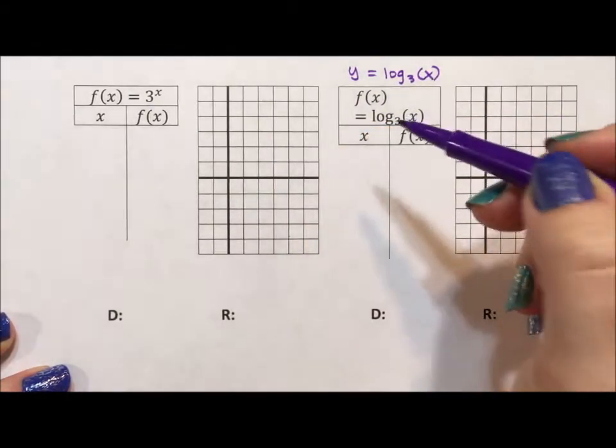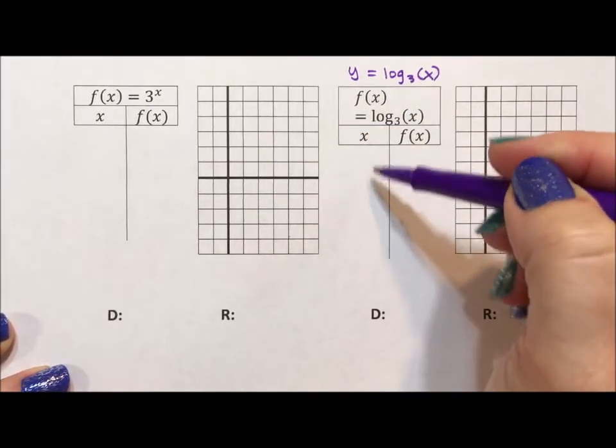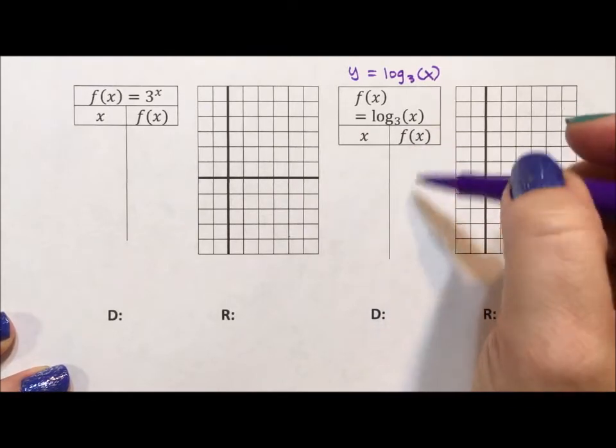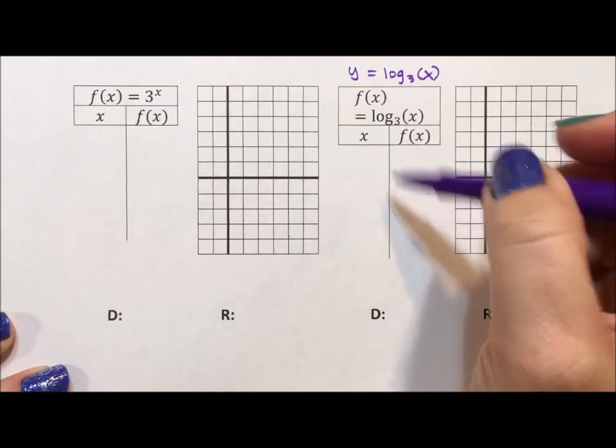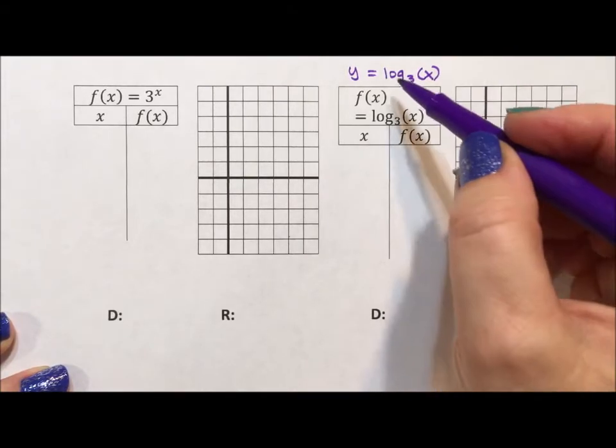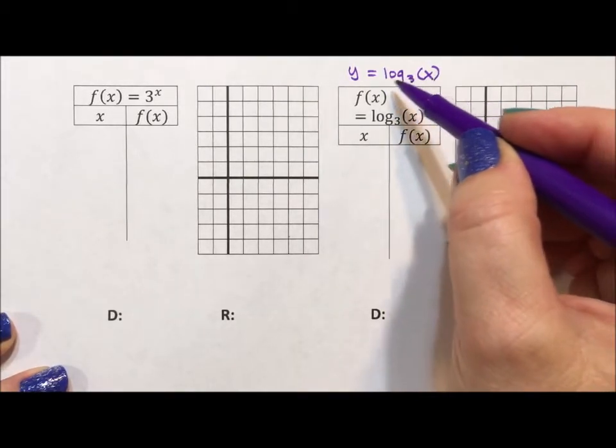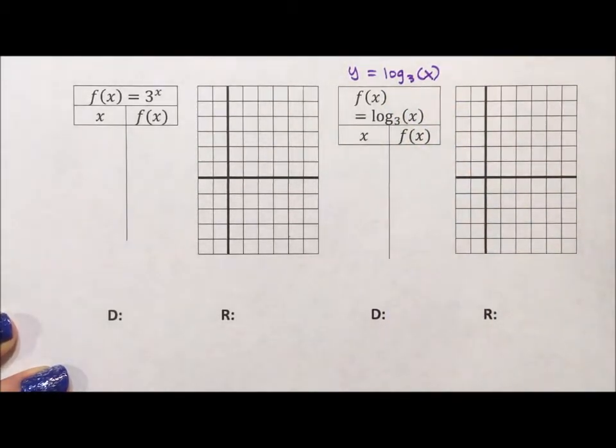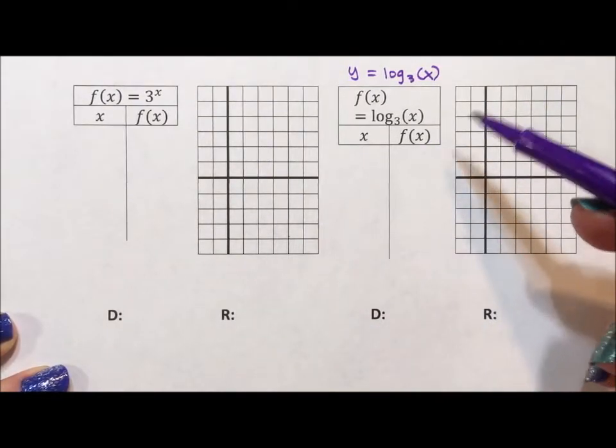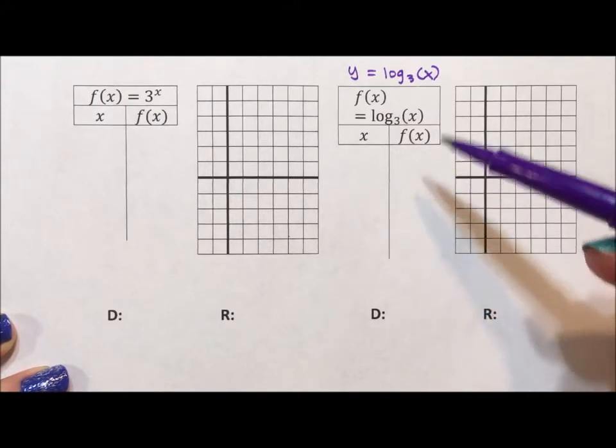So ultimately what I want to graph is y equals log base 3 of x. The problem is normally if you're graphing by using a table of values, you put in a bunch of values, you figure out the y to the x and graph. But if I start to put in a bunch of x values, I'm going to get a lot of decimals. It's not going to be as pretty as I want it to be or as simple because ultimately I'd like to be able to do this without a calculator.